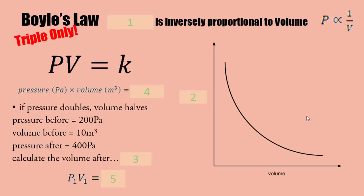Boyle's law, which is the relationship between pressure and volume. Pressure is inversely proportional to volume - double the pressure, half the volume. This can be expressed as pressure times volume is a constant. This is only on triple. One way to do this is to say pressure times volume before equals pressure times volume afterwards.